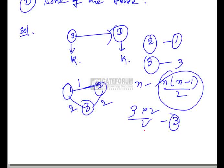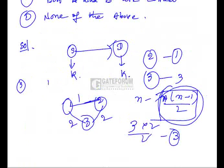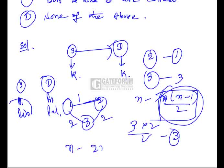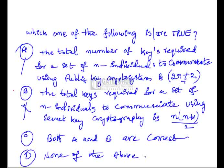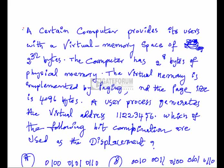For public key cryptography, each communicating party maintains two keys: a private key and a public key. So for n users, 2n keys are required. Option A states it is 2n+2, which is also wrong. Option C says both A and B are correct, which is wrong. Therefore, option D — none of the above — is the correct answer, since secret key requires n(n-1)/2 keys and public key requires 2n keys.